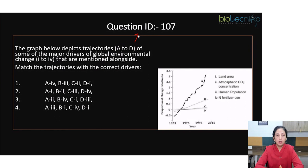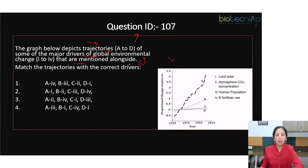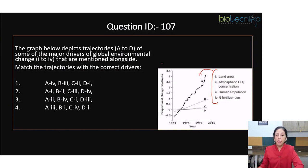Now let us move to question ID number 107. This is again a graph-based question, as we can definitely expect in ecology. The graph below depicts trajectories — four trajectories A to D have been provided. Some of the major drivers of global environmental change are mentioned alongside. We have to match the trajectories with the correct drivers.